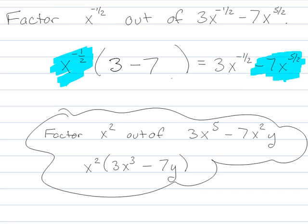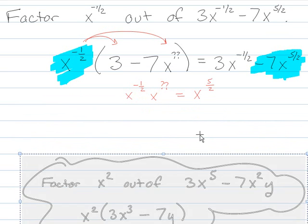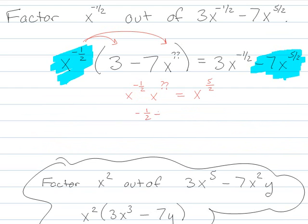And this is just kind of like x to the what is going to give me 5 halves. So one way to think about it is to kind of go ahead and distribute it again. So we'd say, okay, x to the negative 1 half times, I'm not going to really worry about the 7, times x to the 1 is going to give me x to the 5 halves. I remember, I have to add these together. So I know that I need minus 1 half plus something has to give me 5 halves.